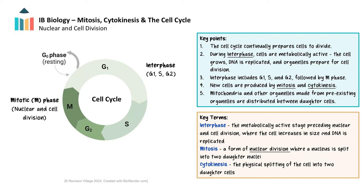During the G1 phase, the cell grows and carries out its normal functions. It synthesizes proteins and organelles and increases in size. This phase is critical for preparing the cell for DNA replication. During S phase, the cell replicates its DNA, ensuring that each chromosome consists of two sister chromatids. This phase is essential for providing the genetic material needed for both daughter cells.